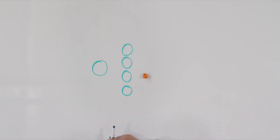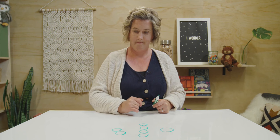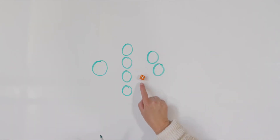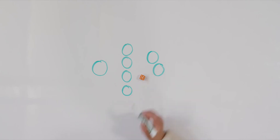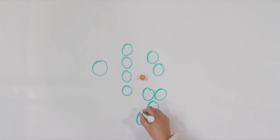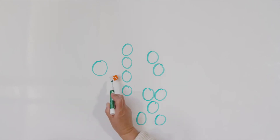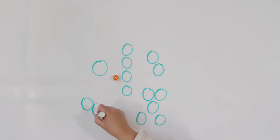What number do you see there? One, two. Let's draw two circles. One, two. Which number do you see there? Let's count the dots. One, two, three, four, five. I'm going to draw five circles. One, two, three, four, five. I'm looking for one more number. Can you tell what number is missing? I got it. What number is this? One, two, three. Let's draw three circles. One, two, three.